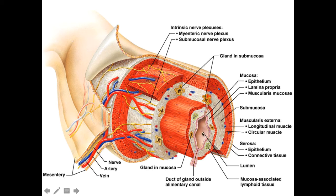Starting from the lumen — the inside — we first have the mucosa. The tunica mucosa is this membrane composed of first the epithelial lining, which is either going to be stratified squamous or simple columnar. Below this epithelial layer is the lamina propria — a mucous membrane has the epithelial layer and then a supportive connective tissue layer below. That connective tissue layer is referred to as the lamina propria. Third within the tunica mucosa is a thin layer of muscle referred to as the muscularis mucosa.